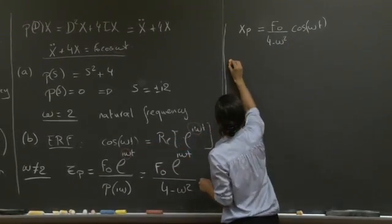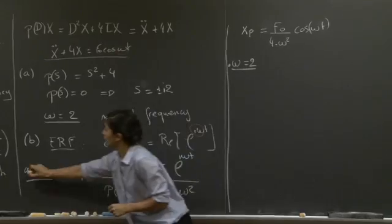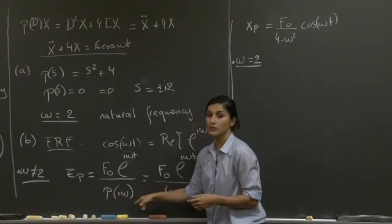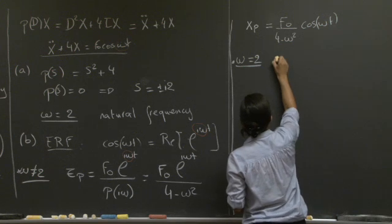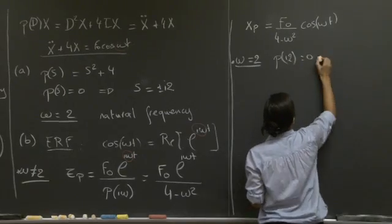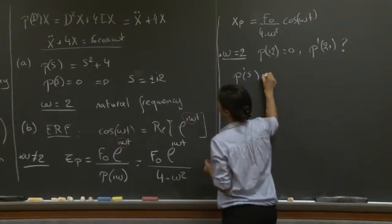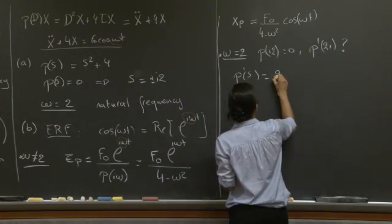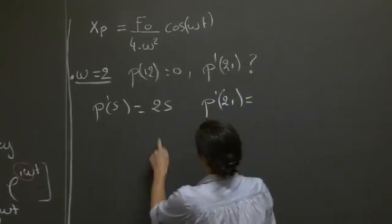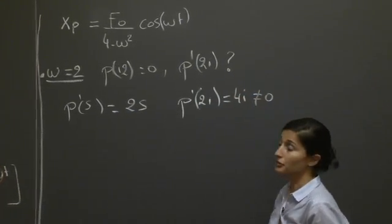OK? So now let's take the case omega equals 2. OK? So what happens? If omega equals 2, this formula that you're given fails, and you need to seek for the derivative of the characteristic polynomial, and we basically have 2i equals 2. So what about p prime of 2i? So p prime of s is simply 2s. So if we evaluate p prime of 2i, we simply have 4i, which is not equal to 0.